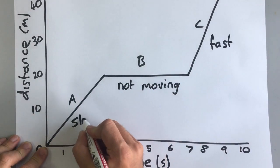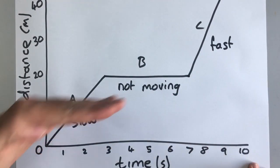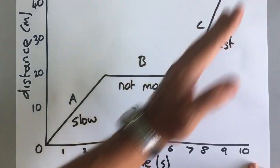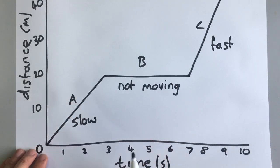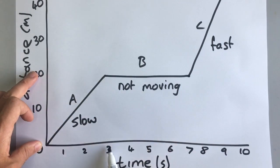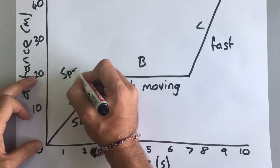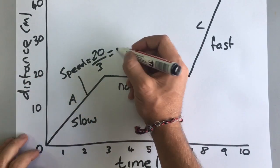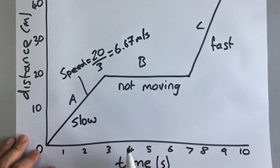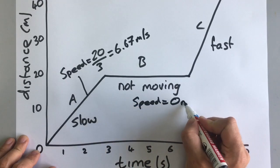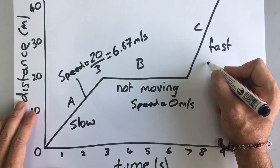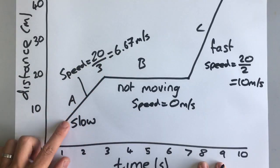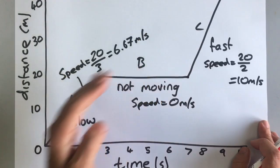So this section is fast and this section is slow. If it's a horizontal line, that person's not moving. If the gradient is shallow, he's moving slow, and if it's a steeper gradient, he's moving fast. To calculate the speed in A, we do twenty divided by three, so the speed is six point six seven meters per second. In B he's not moving, so the speed is zero meters per second. In C he's travelled twenty meters in two seconds, so the speed is twenty divided by two, which is ten meters per second. So the steeper the gradient, the faster he is travelling.